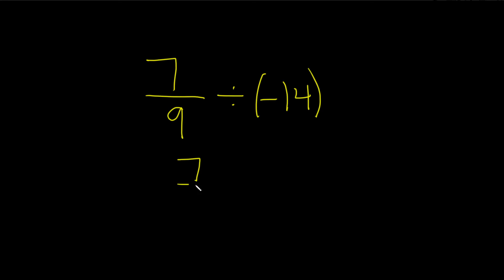So we have 7 over 9 divided by, I'm going to drop the parentheses. Whenever you have a whole number and you want to write it as a fraction, you can just divide it by 1 like this. So this is 14 over 1. You can always do that, just divide it by 1.